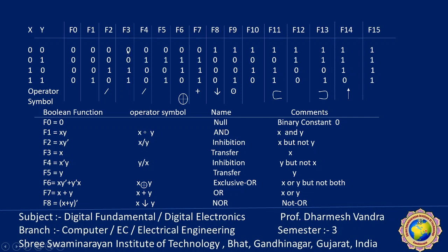F3: the value is the same replica as x. If x is 0, F3 is 0; if x is 1, F3 is 1. So we can say it is a transfer of the value of x — F3 equals x. It is also known as a buffer function.